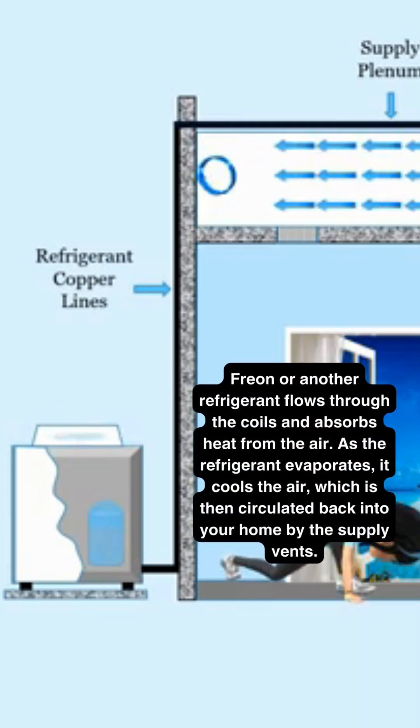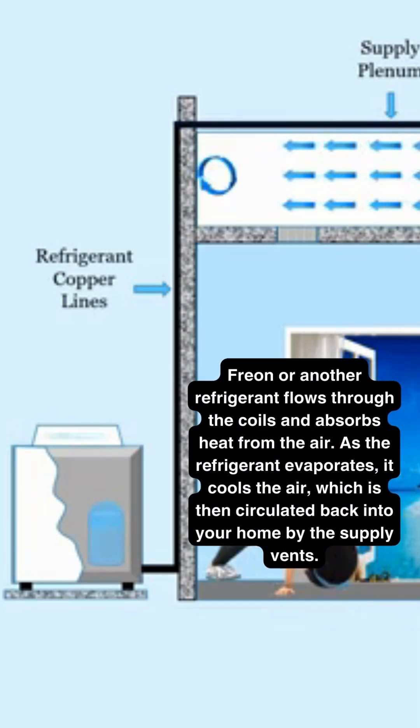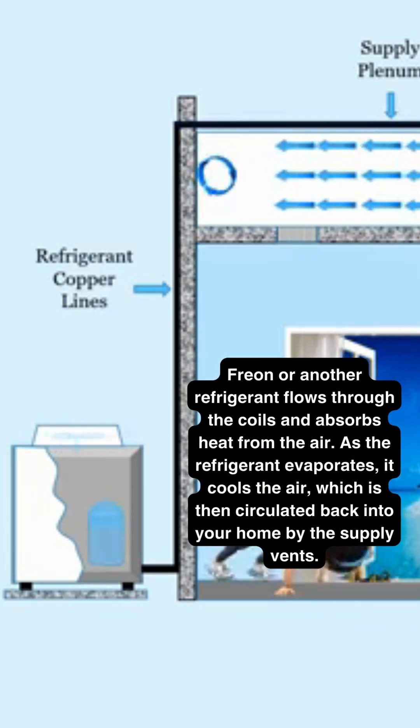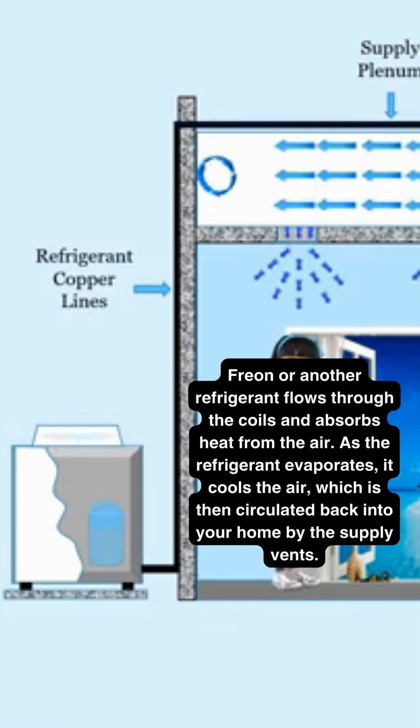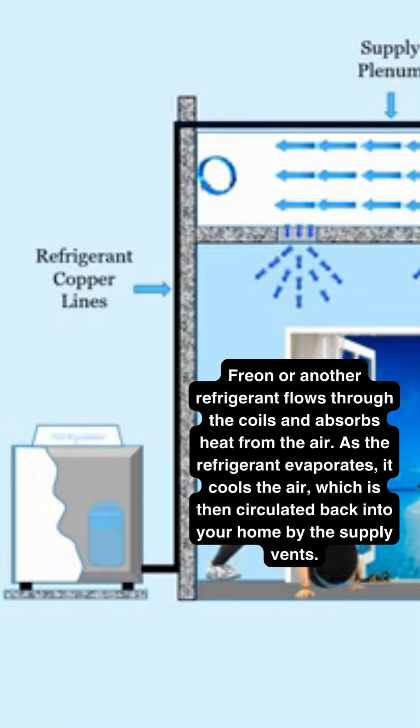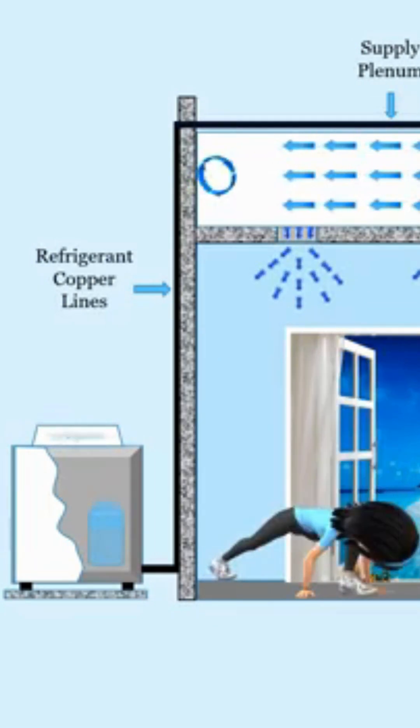Since the refrigerant has absorbed some of the heat from the air, the air coming out the other side of the evaporator coil is cooler, typically by about 15 to 20 degrees. This air is then forced back into your home by the supply vents.